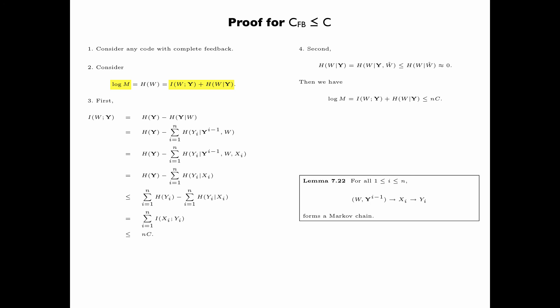So, from step two, we have log M equals I(W;Y) plus H(W|Y), where I(W;Y) is less than or equal to nc, and H(W|W_hat) is very close to zero. And therefore, we obtain that log M is less than or equal to nc asymptotically. Formally, we apply Fano's inequality to upper bound H(W|W_hat). Upon filling in the epsilons and deltas, as in the proof of the converse of the channel coding theorem, we conclude that R is less than or equal to C for any rate R achievable with complete feedback.